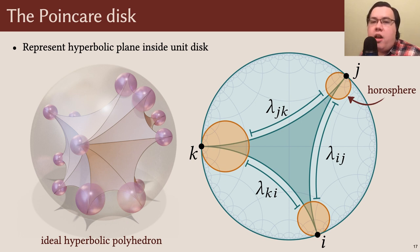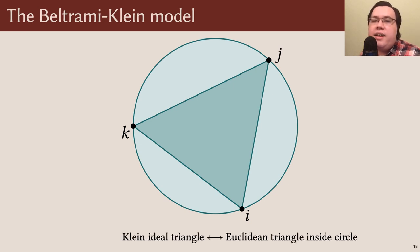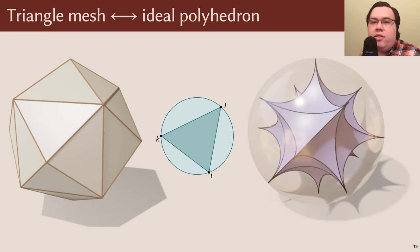Amazingly, it turns out that any triangle mesh defines an associated ideal polyhedron. For this, we need to move to another model, the Beltrami-Klein model, which is very similar to the Poincaré disk except that geodesics appear as straight lines. Hence, ideal triangles look just like ordinary Euclidean triangles enclosed by a circle. So given any ordinary triangle mesh, we can take each triangle and draw its circumcircle around it to obtain an ideal triangle in the Beltrami-Klein model.